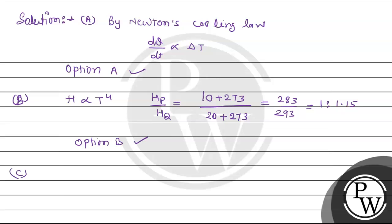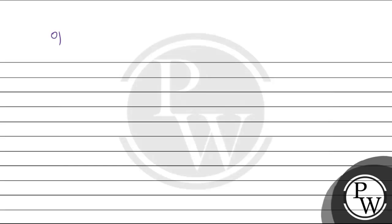For option C, eta equals 1 minus 100 upon 400, which gives 3 by 4, i.e., 75% efficiency. So option C is correct. For option D, since d-theta by dt is proportional to delta T, option D is wrong.